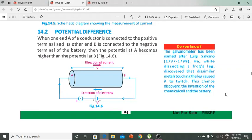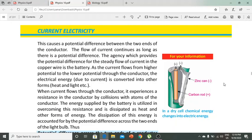Potential difference: When one end A of a conductor is connected to the positive terminal and the other end B is connected to the negative terminal of the battery, then the potential at A becomes higher than the potential at B. This causes a potential difference between the two ends of the conductor.